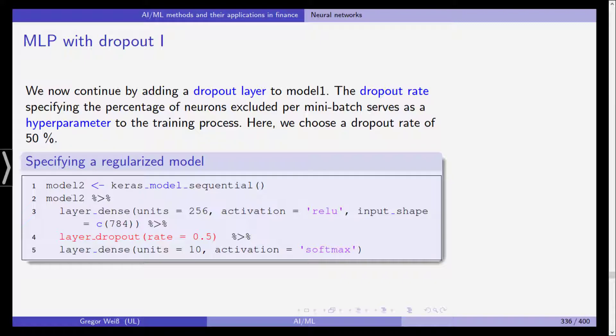We estimate and fit model two again with keras model sequential. We have layer dense 256 neurons activation function is relu, and then we also have the layer dropout which is rate 50%, and then the last layer with 10 outputs and we are using softmax as the activation.